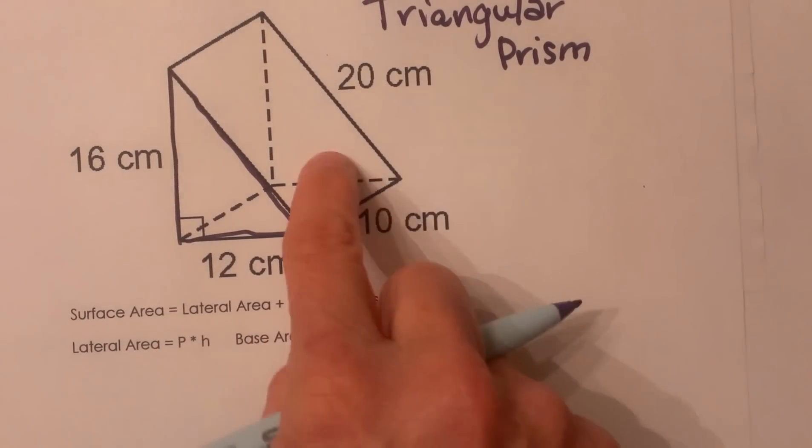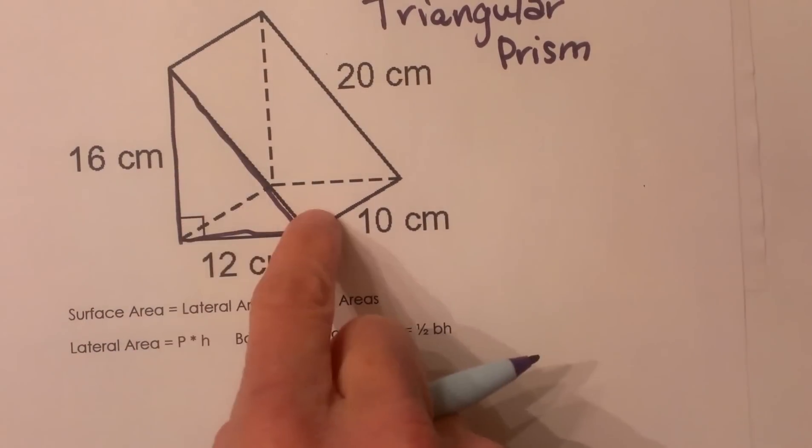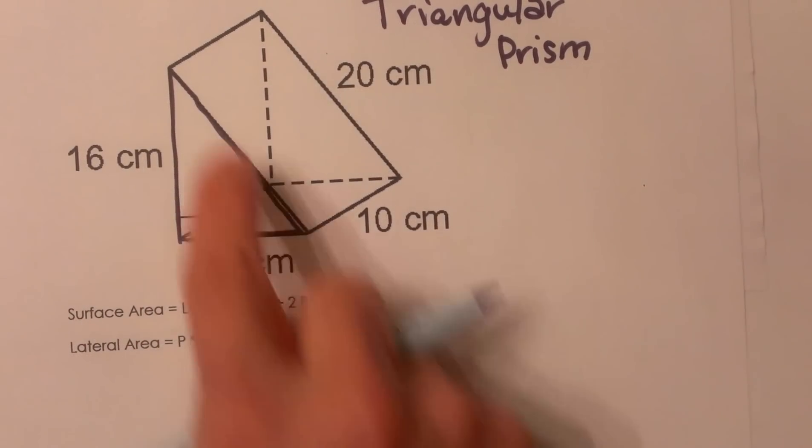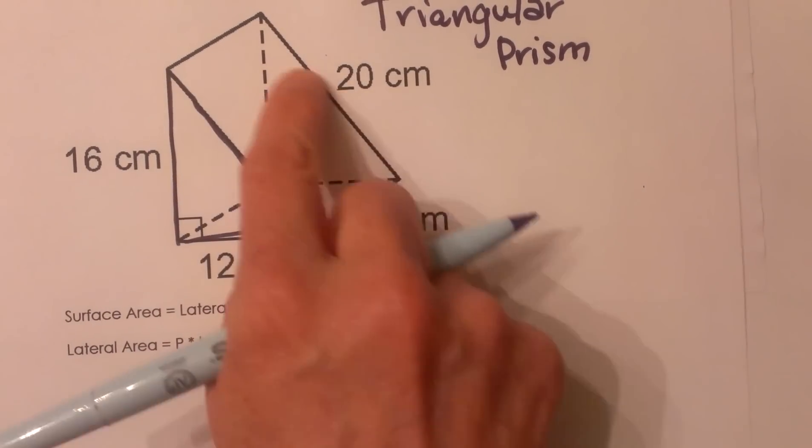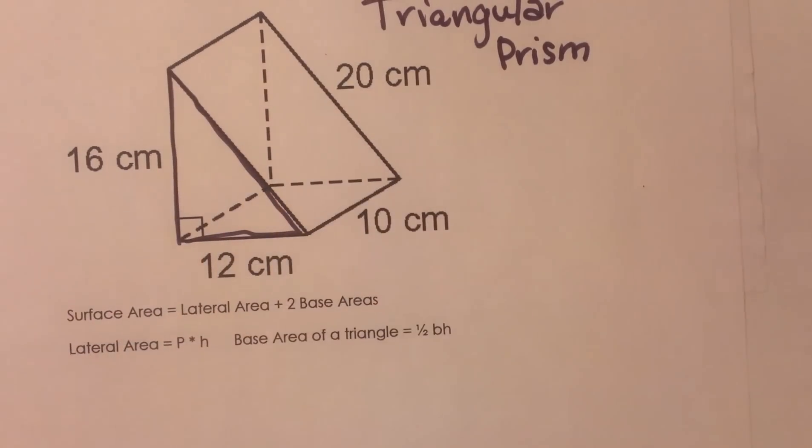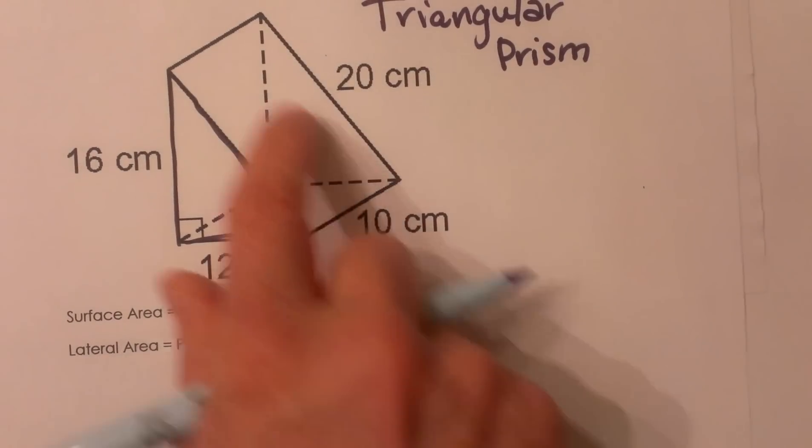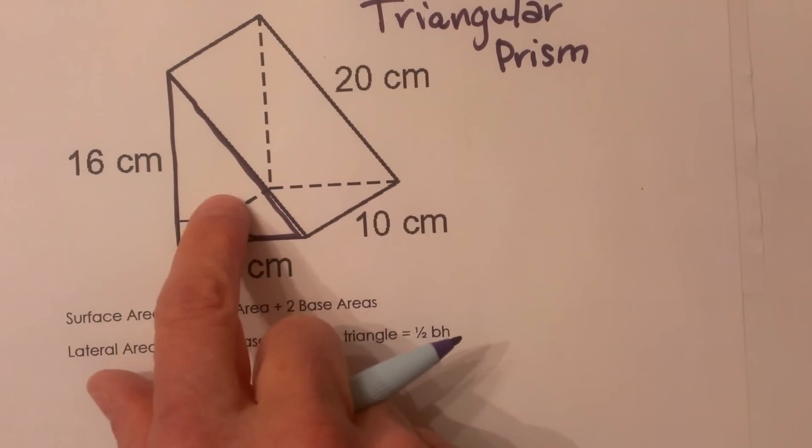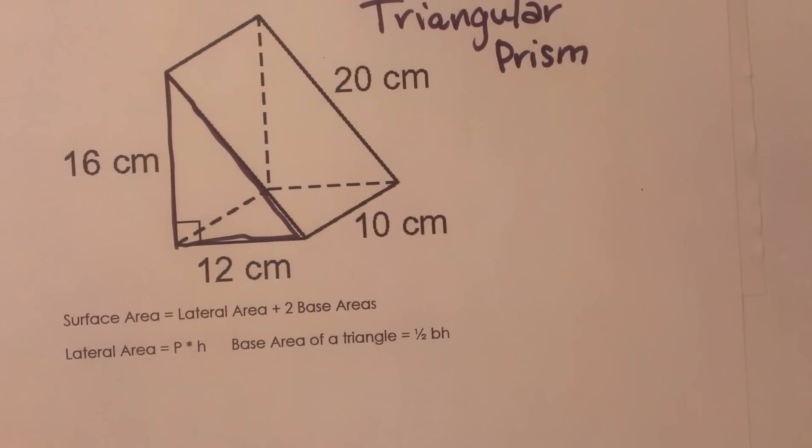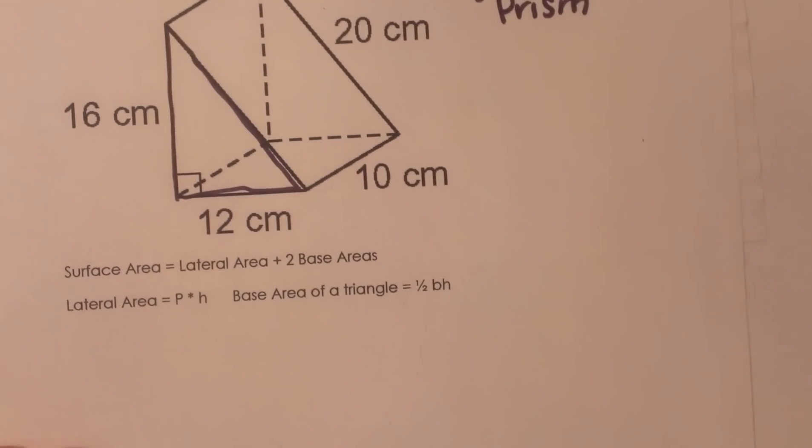So my lateral area are these three sides, which are all rectangles. And then my base areas are these two triangles, because remember the bases are the parallel sides. So I've got to take this lateral area and add a top base and a bottom base to get the whole surface area. Let's start cranking it out.